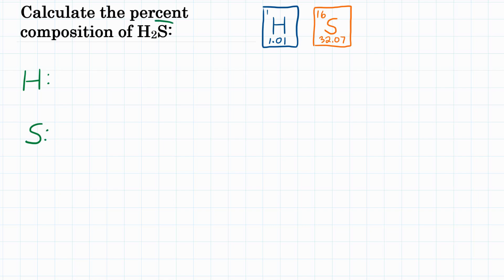Now, if we had one mole of H2S, that would be two moles of hydrogen and one mole of sulfur. So for hydrogen we have two moles per one mole of H2S, and one mole of sulfur per one mole of H2S. Those are our moles for this compound. We want to turn those into masses.